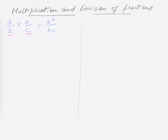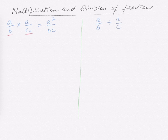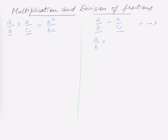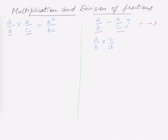Now let's do the rule for division. If we have the equation of the form a/b divided by a/c, we need to reverse the second term and change the divide sign to multiply. So it becomes a/b times c/a. We just reverse the term after the divide sign. Now a cancels with a, so what's left is c divided by b.